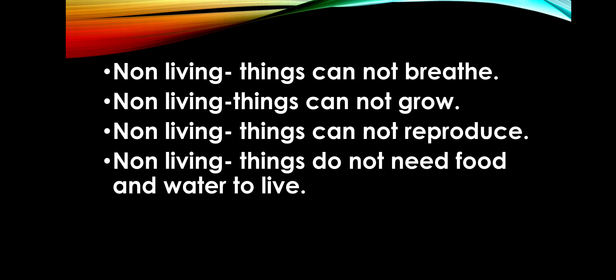Also, non-living things cannot breathe. Non-living things cannot grow. Non-living things cannot reproduce. Non-living things do not need food and water to live. यानि कि living things में जितनी भी characteristics होती हैं, non-living things में वो सभी absent होती हैं. Living things can breathe, but non-living things cannot. Living things can grow, reproduce — non-living things cannot. So all these are the differences between living things and non-living things.